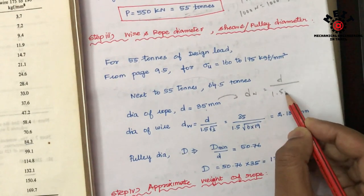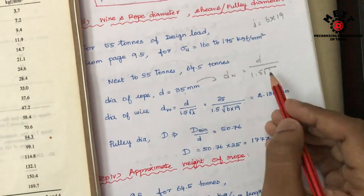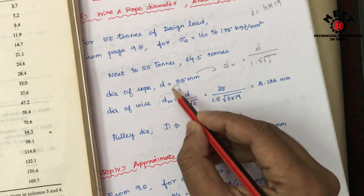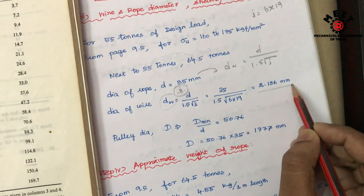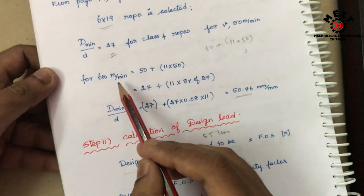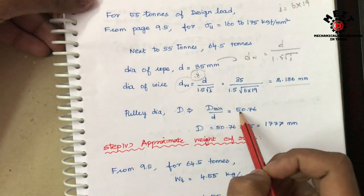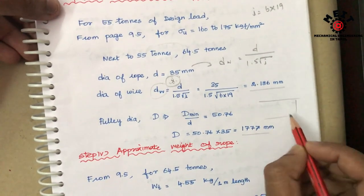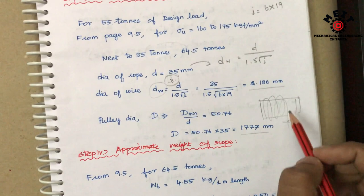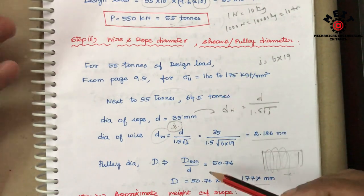The diameter of the rope is 35 mm. The diameter of wire dw uses the formula: dw = d_rope / (1.5 × √(number of strands × wires per strand)). For 6×19 rope: dw = 35 / (1.5 × √(6×19)), giving dw = 2.16 mm. The diameter of the pulley is 50.76 mm (from D/d ratio × rope diameter). Drum diameter D = 35 mm. This completes the rope specification: wire diameter, rope diameter, pulley diameter, drum diameter.